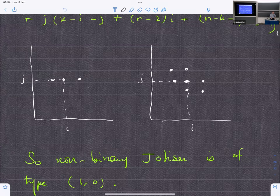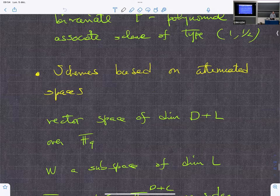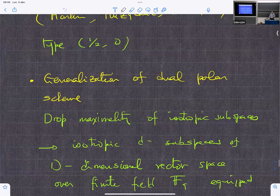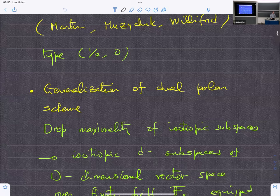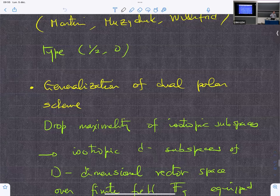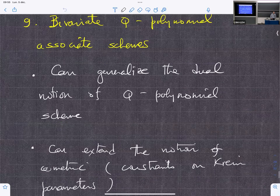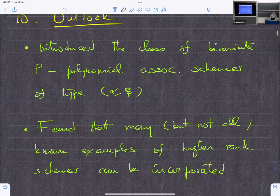The polynomials associated to that scheme are interesting. They're made out of univariate Krawtchouk polynomials and univariate Hahn, dual Hahn polynomials. And so this provides the recurrence relation.